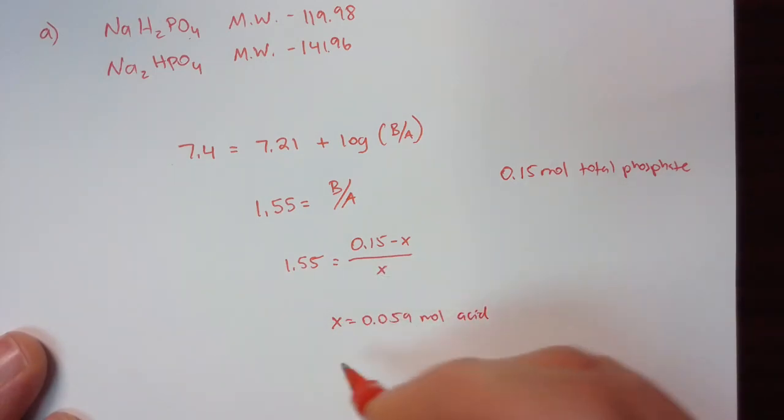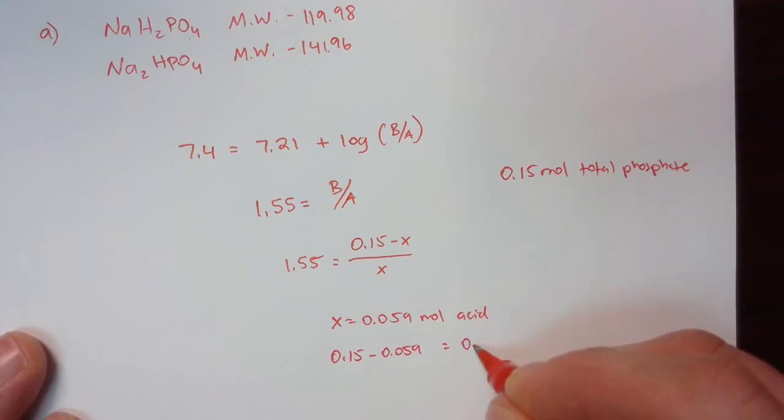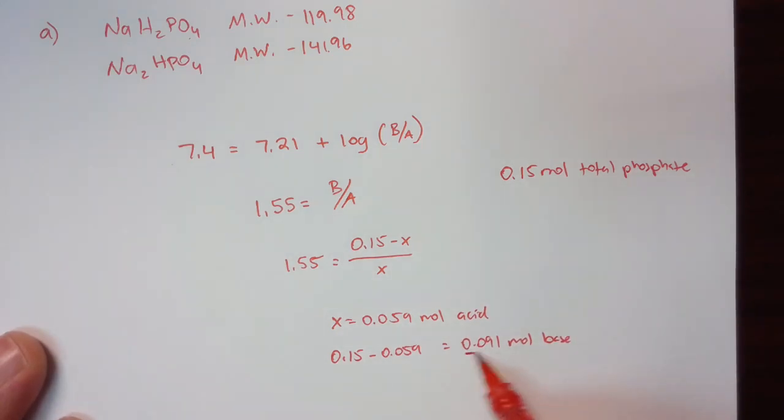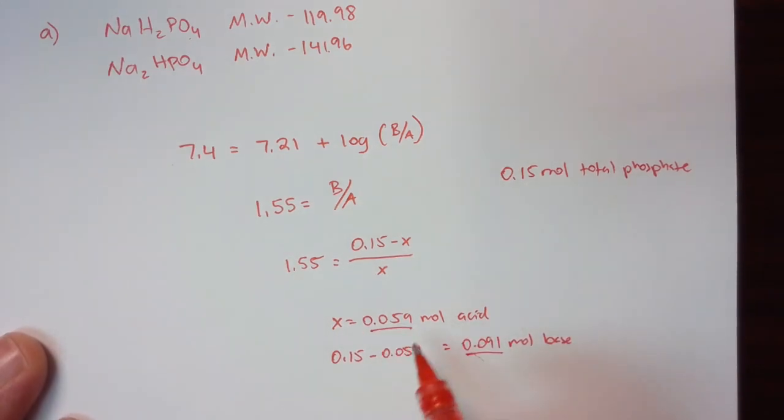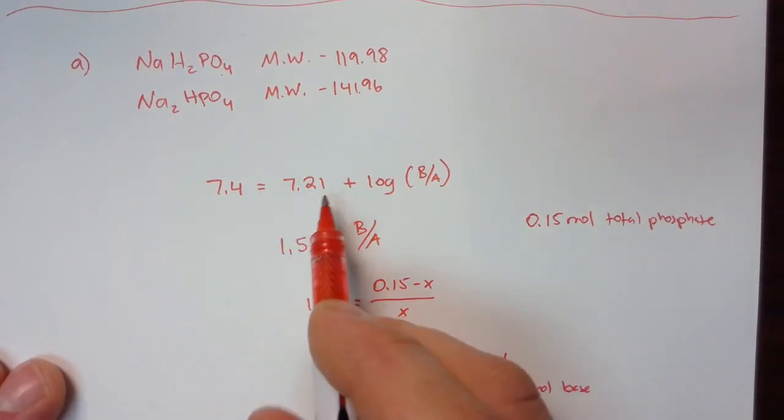In order to get the moles of base we're just going to take 0.15 minus 0.059 which will give us 0.091 moles of base. And again that's what we would expect. We would expect this number to be more than this because the pH is greater than the pKa.